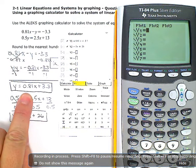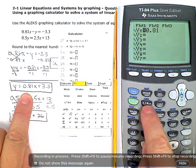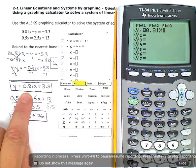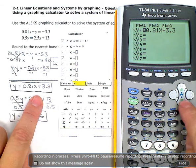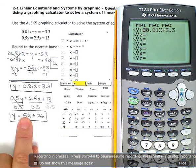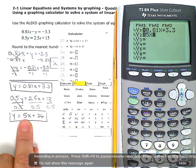So 0.81. This is the X button on these calculators. This is the X plus 3.3. Then arrow down, and I'm going to enter in this one. 5X plus 26.